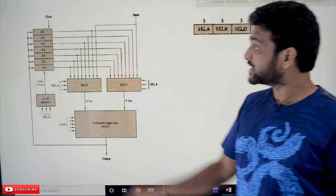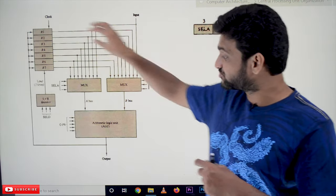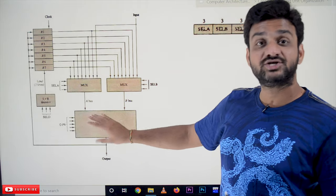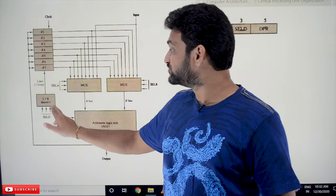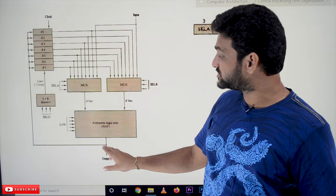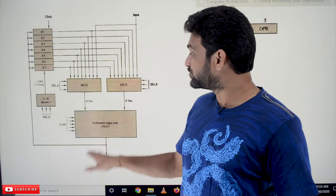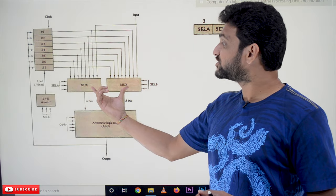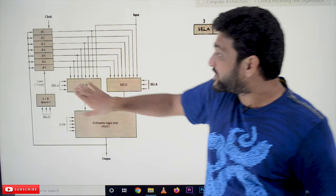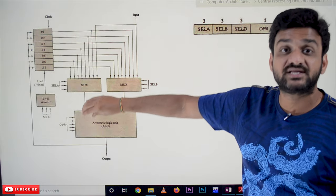This is the block diagram for general register CPU organization. We have a register set, and multiplexers are used to transfer data from registers to the ALU. The values obtained as output from the arithmetic logic unit will get transferred onto the registers by using a decoder. This decoder selects one of the registers to store the ALU output.